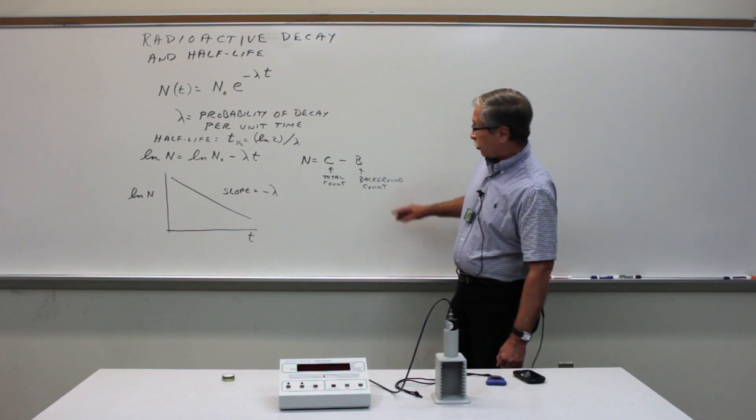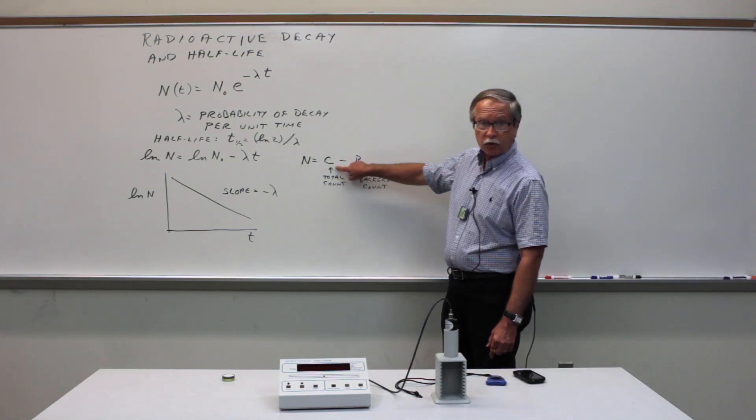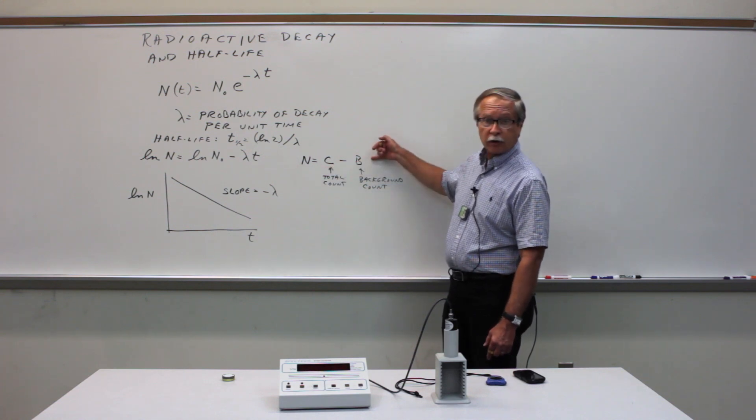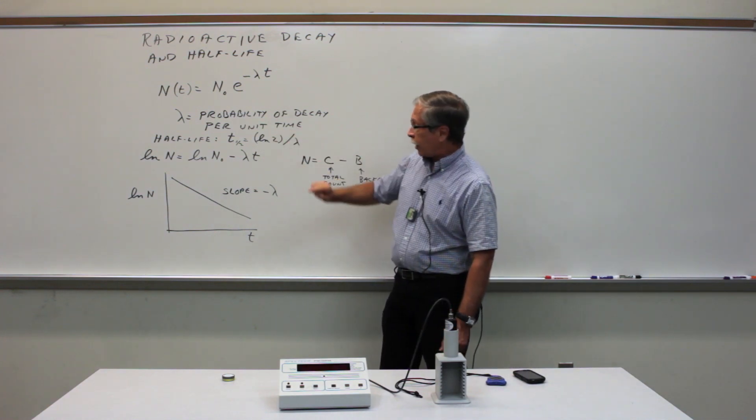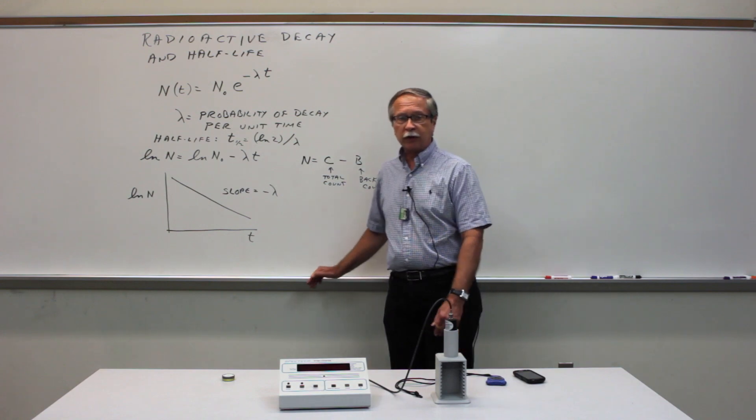Just to recap, what you're doing is measuring the total number of counts on the instrument as a function of time, correcting the total counts for the presence of background, and then from that information you will determine the half-life and compare it to the published value. Thank you.